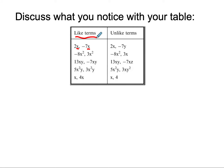If we look at negative 8x squared and 3x squared, they both have x squared, so they are considered like terms. Here, both of these have an x and a y, so since they both have an x and a y, they are like terms.